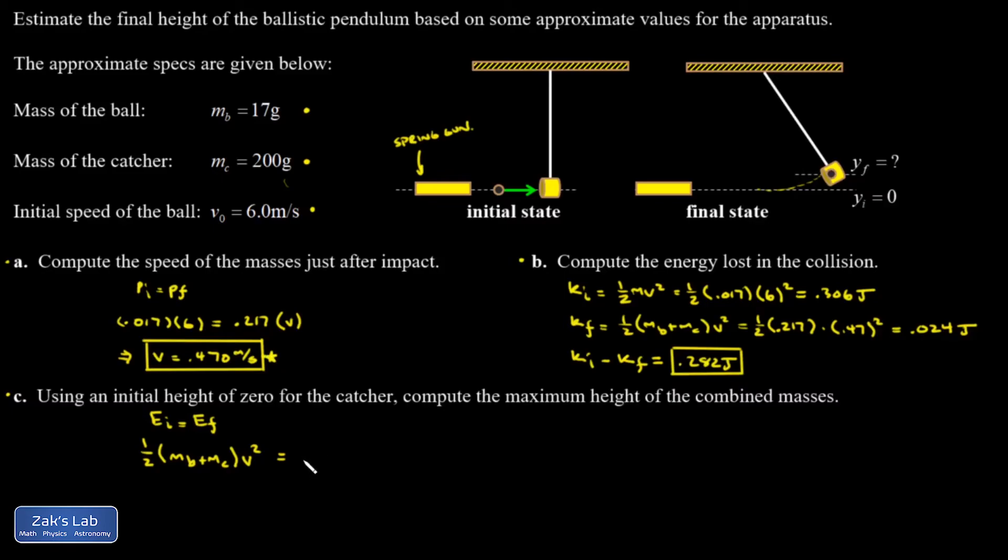E final is 100% potential energy: the total mass times g times y final, which is what I'm solving for. I assumed the initial y coordinate was zero to simplify.